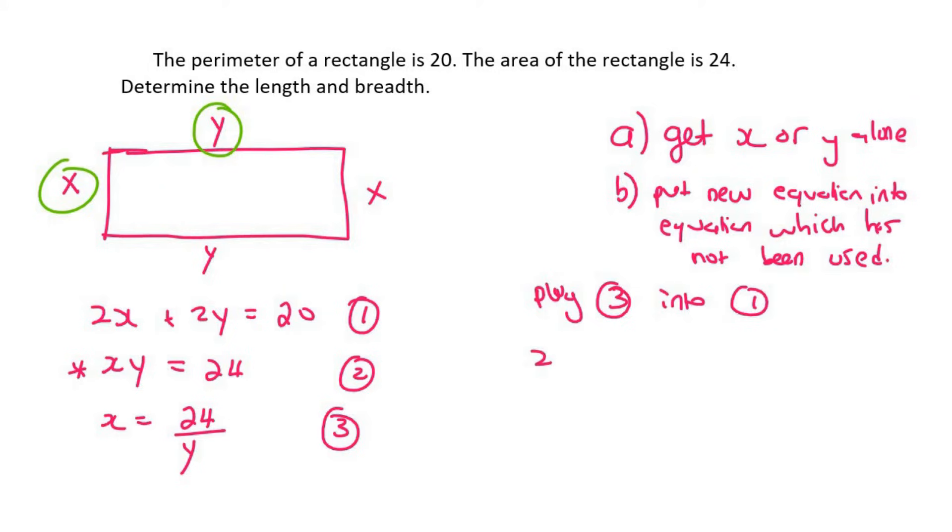So wherever we see an x, we're going to replace it with 24 over y. And then I'm going to multiply out, so that's 48 over y. Remember that this two only goes to the top, plus 2y equals 20.